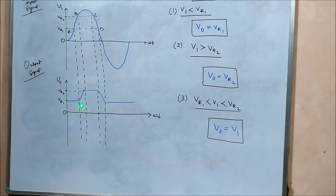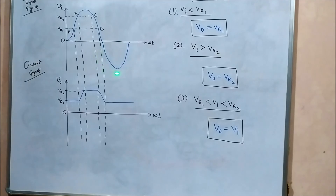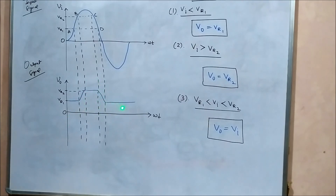Paying attention to the output waveform: changes have been made only in the positive half cycle. The bottom portion is clipped, the top end portion is also clipped, and the entire negative half cycle has been clipped and removed from the output. This is a positive bias clipper circuit, because all the clipping changes have occurred only in the positive half cycle.